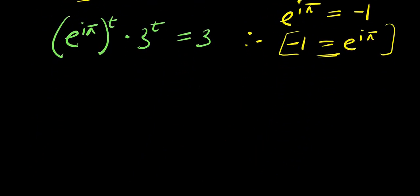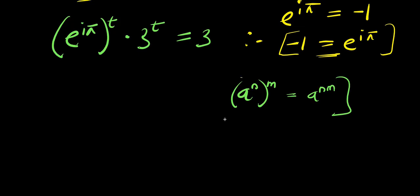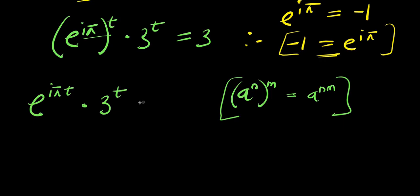Now at this point, if you have (a^m) raised to the power of n, this equals a^(m·n). So we can multiply the exponents: we are going to have e^(i·π·t) times 3 to the power of t, and this equals 3.